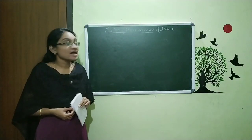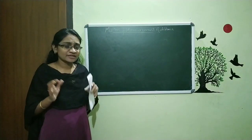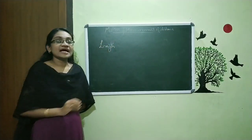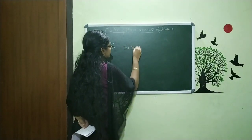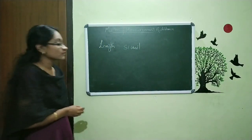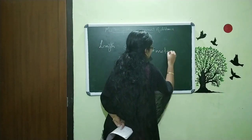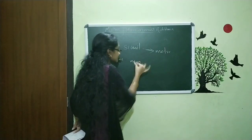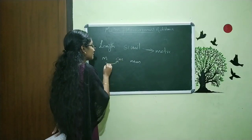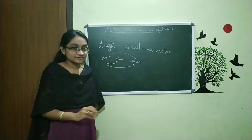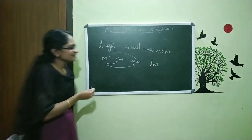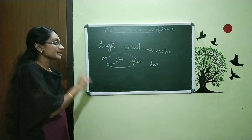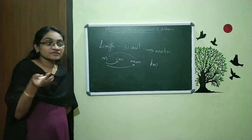Hi students, welcome to our physics class. Our chapter name is Motion and Measurement of Distance. This is a very simple chapter. In the last class we discussed about length and its SI unit. The SI unit of length is the meter. We also studied centimeter, millimeter, and how to convert meter to centimeter, meter to millimeter, and kilometer. These are some of the units used for measuring length in daily life. We also discussed measurements used in ancient times.